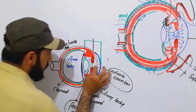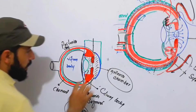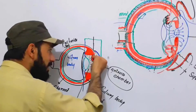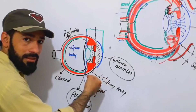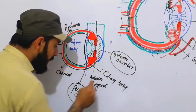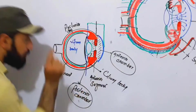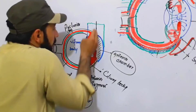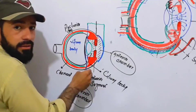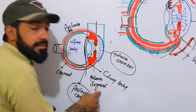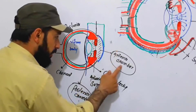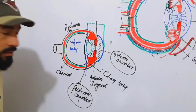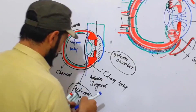So, the anterior chamber and posterior chamber are separated by the iris. Iris is a curtain between the anterior chamber and posterior chamber. This means that the iris divides the anterior segment of the eye into the anterior chamber and the posterior chamber.